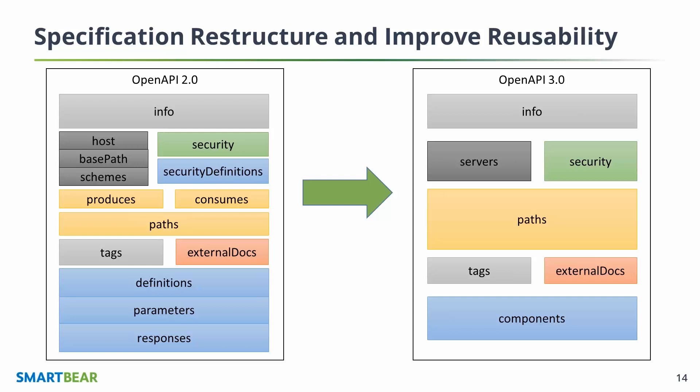You can even see in terms of color schemes in the diagram — things like definitions, parameters and responses, and security definitions are now in the components part. The produces and consumes disappeared, and we'll cover that in a bit — it's now inside the path object.